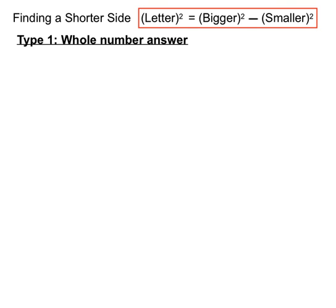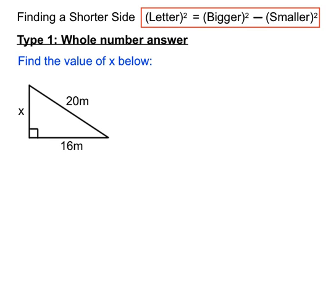Let's have a look at an example where we're expecting a whole number answer. Find the value of x in this triangle down here. Now we're not finding the hypotenuse this time, so we'll have to stick to a slightly different arrangement of the same rule, the Pythagoras rule. It's just a rearrangement of the original rule.